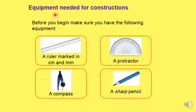The equipment needed for construction. What do we need? We need a ruler, protractor, a sharpened pencil and a compass.